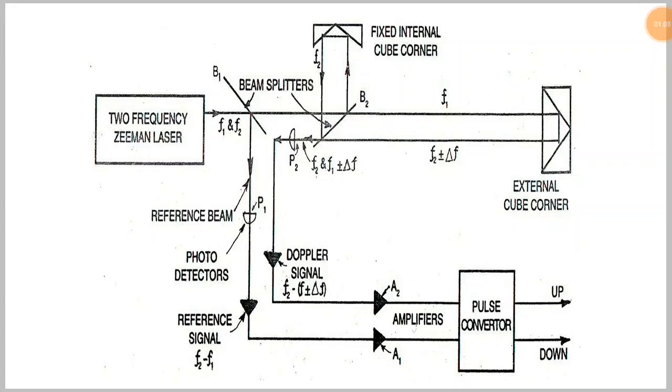The laser source is split by the beam splitter B1. One of the light sources travels towards B2 and reaches the external cube corner where the displacement is being measured.